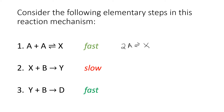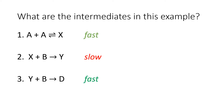Looking at these three mechanisms, what are the intermediates? Remember, an intermediate is formed and used. Notice that 2A gives us X, so X is an intermediate, as well as Y. As soon as X is produced, it's used to create Y. Once you have some Y, then you can use that intermediate to produce D.